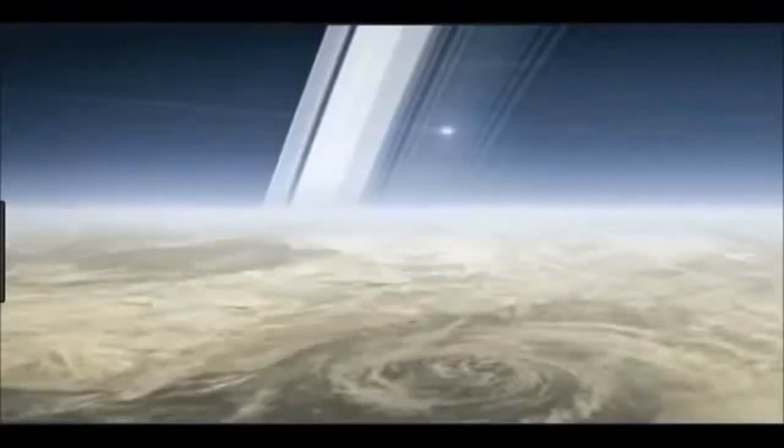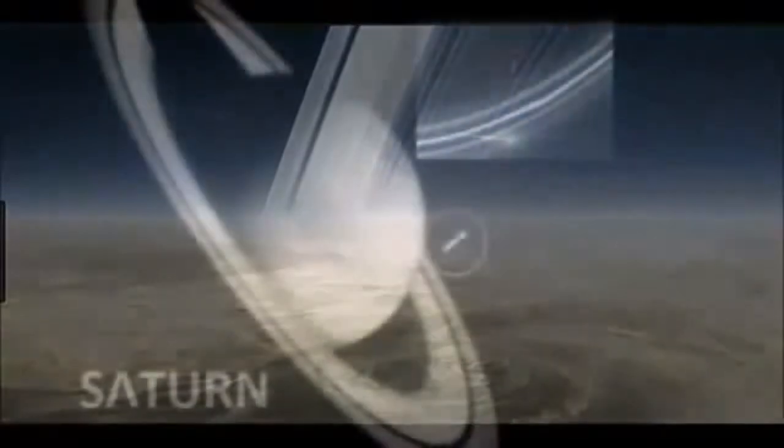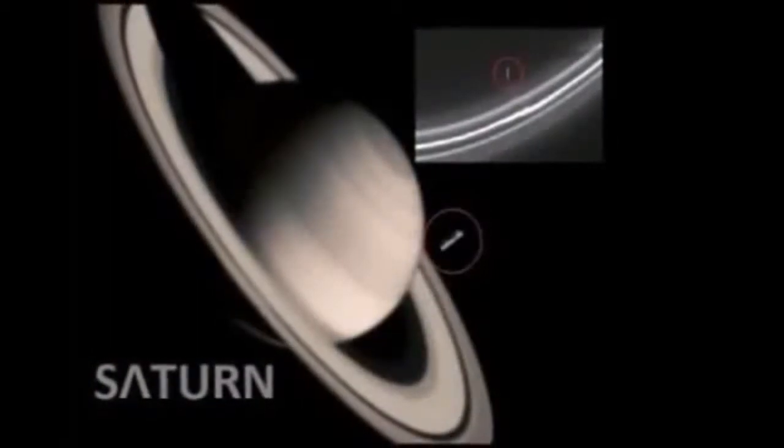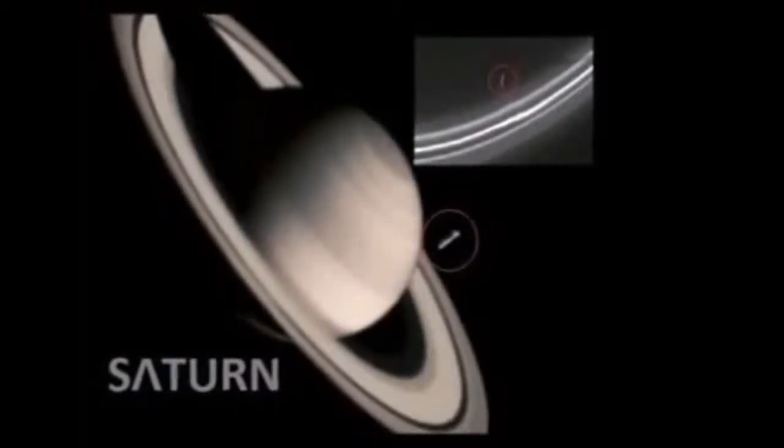Just before the NASA Cassini spacecraft burned in the atmosphere of Saturn, it managed to photograph an unexplained glitch on the rings of Saturn. What is that? Where does it come from? Where is it going?